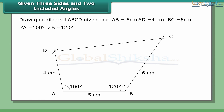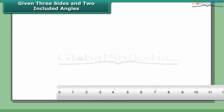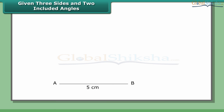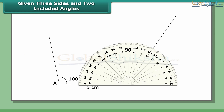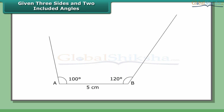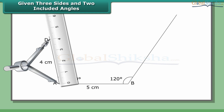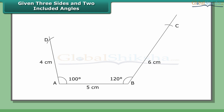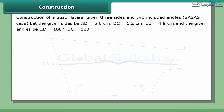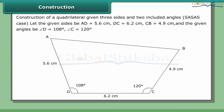Given three sides and two included angles, draw quadrilateral ABCD: AB = 5 cm, AD = 4 cm, BC = 6 cm, angle A = 100°, angle B = 120°. Steps: 1. Draw AB = 5 cm. 2. At A draw an angle of 100° and at B draw an angle of 120°. 3. Mark AD = 4 cm and BC = 6 cm. 4. Join CD. ABCD is the required quadrilateral.